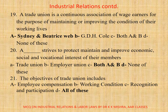Question 19: A trade union is a continuous association of wage earners for the purpose of maintaining or improving the condition of their working lives. Correct option is A. Sydney and Beatrice Webb. Question 20: A dash strives to protect, maintain, and improve economic, social, and vocational interest of their members. A. Trade union. B. Employer union. C. Both A and B. D. None. Correct option is C. Both A and B.